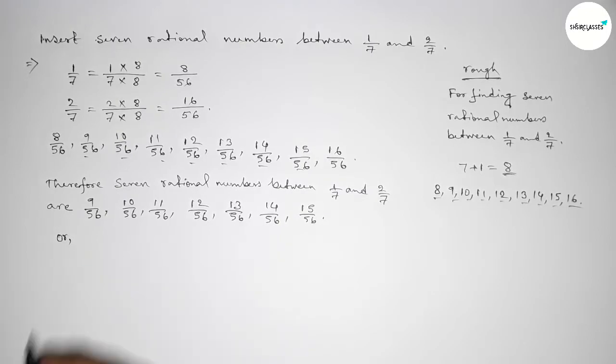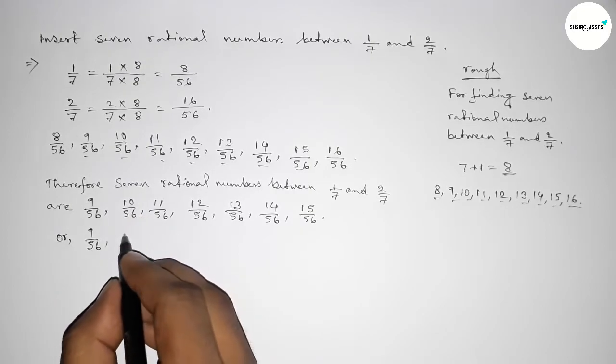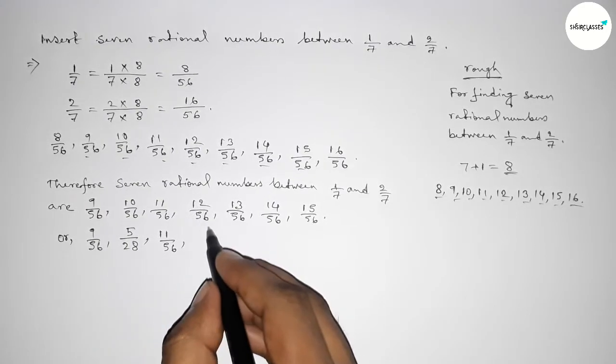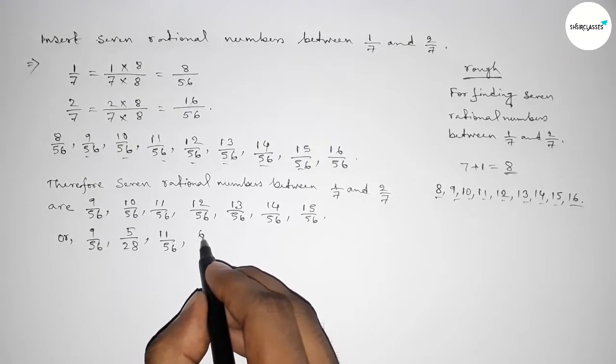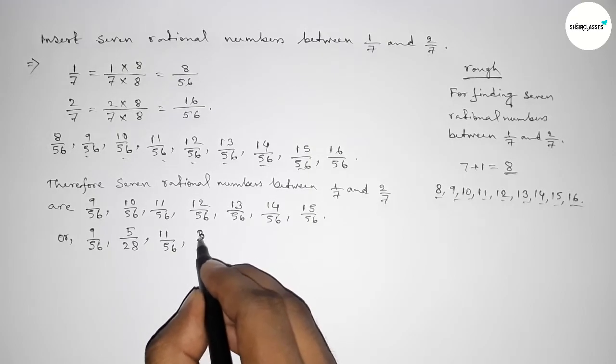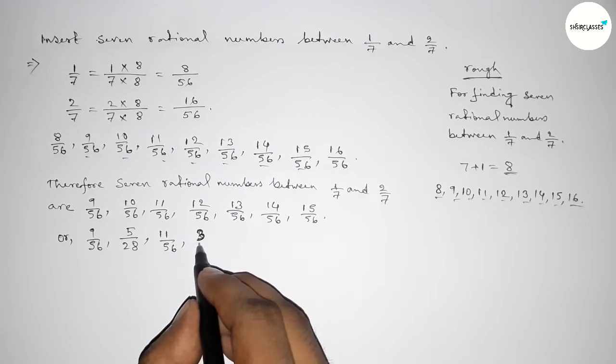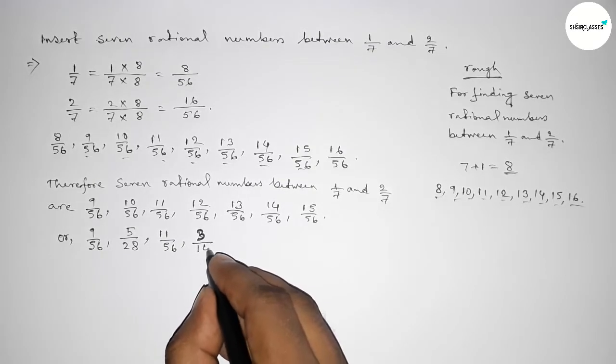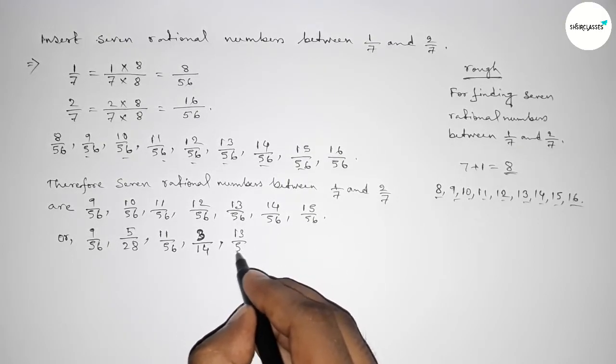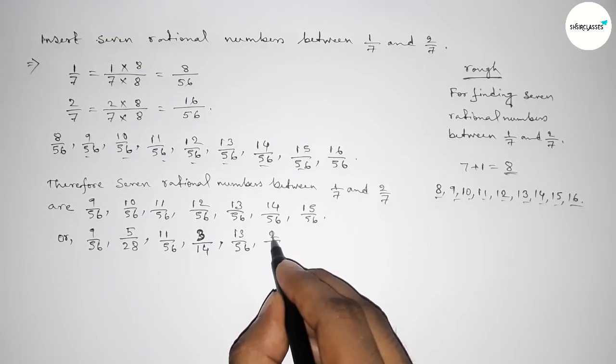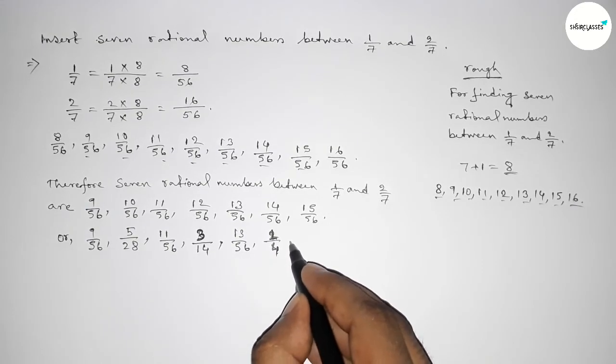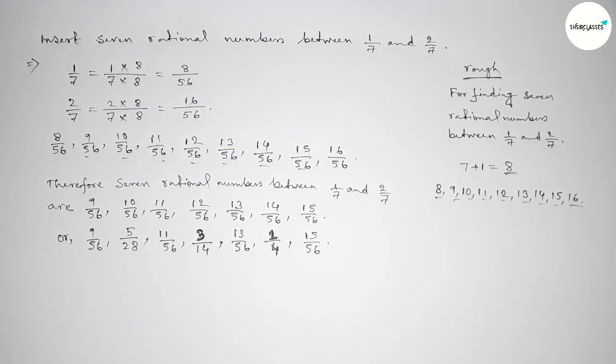Or we can write 9/56, and if you divide both numbers by 2 then 5/28, and here this is same. And if you divide by 4 then 3/14. And if you divide both numbers by 14 then 1/6, then you get 4.